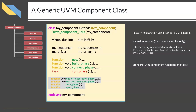Next, you list all the internal members of the class, which could include other UVM component classes. For example, if this is an agent class it should contain a handle for a driver class, a monitor class, and a sequencer class. After all internal variable declarations, you write all the functions and tasks specific to this UVM component. These include: a new function which is the constructor, a build phase function, a connect phase function, and a run phase task.